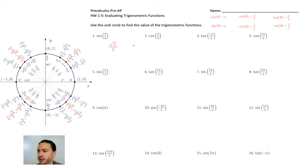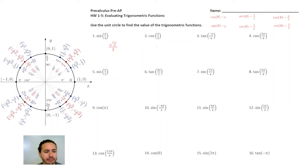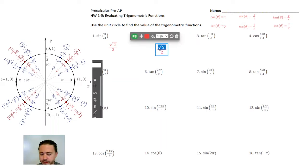Cosine of π over 3: you're going to look at your unit circle. At π over 3, the x value is 1/2. So this is going to be 1/2, looking at the x value.